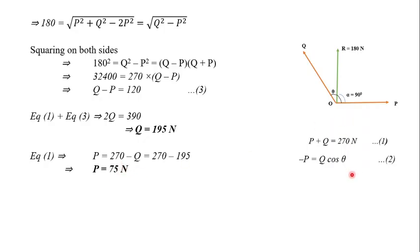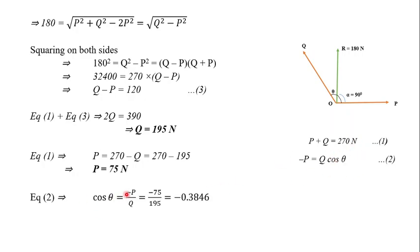To find the angle θ between forces P and Q, we use equation 2: Q cosθ = −P, so cosθ = −P/Q = −75/195 ≈ −0.3846. Therefore θ = cos⁻¹(−0.3846) ≈ 112.62 degrees.